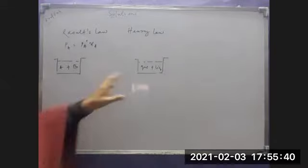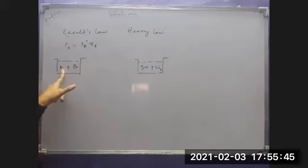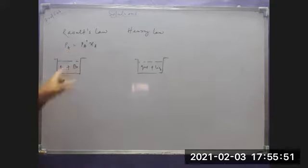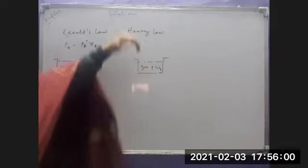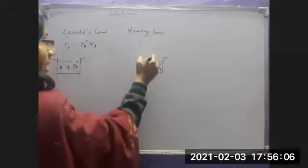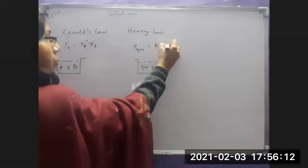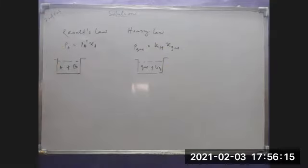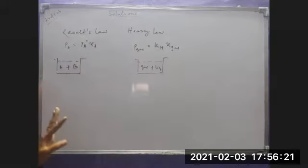This is an A and B mixture, where A is volatile. I'm going to create a pressure here — this is a gas and liquid mixture where gas is dissolved in the liquid. The pressure of the gas is equal to kH times the mole fraction of the gas: φ_gas = kH × x_gas. Similarly, Pa = Pa° × xa.